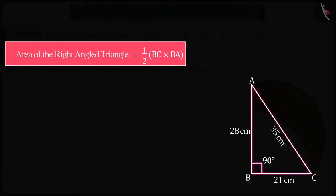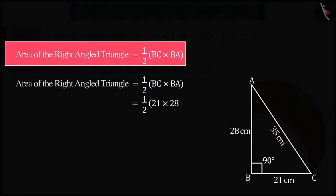Now, if we talk about the area of right-angled triangle ABC, by substituting the values of BC and BA in the formula for calculating the area of a triangle, we get 294 cm².